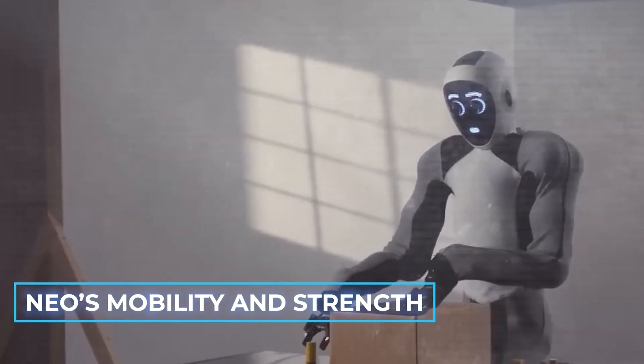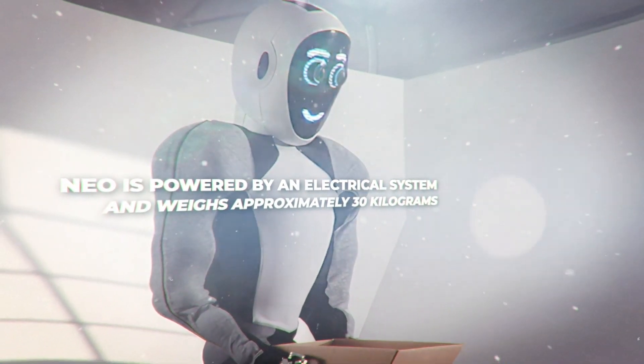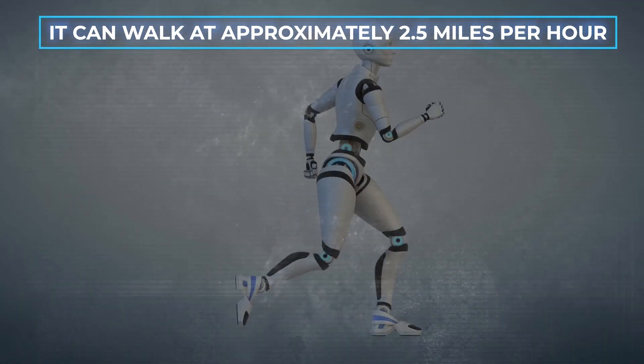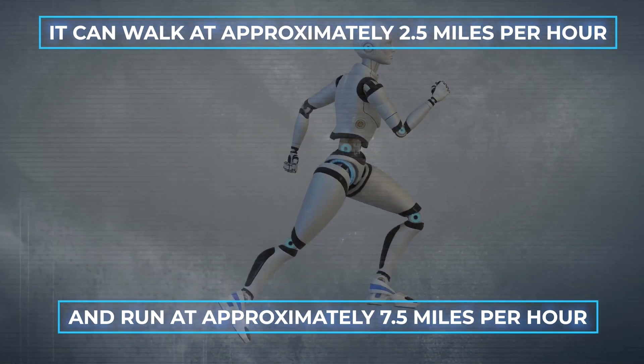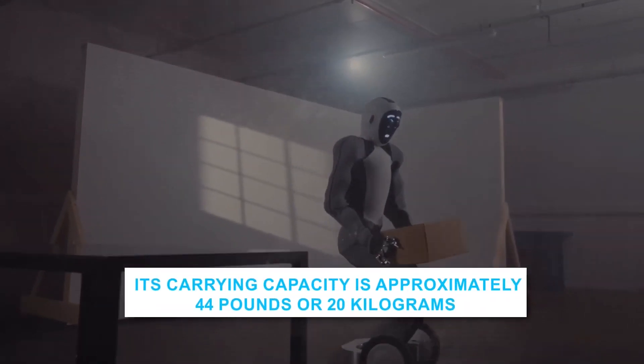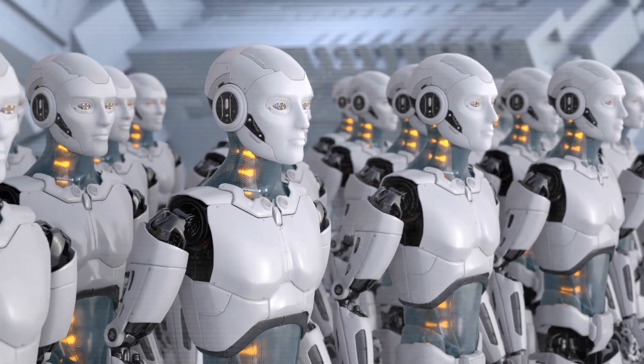NEO is empowered by an electrical system and weighs approximately 30 kilograms, or 66 pounds, making it lighter than many of its competitors. It can walk at approximately 2.5 miles per hour and run at approximately 7.5 miles per hour. Its carrying capacity is approximately 44 pounds, or 20 kilograms, which is astounding given its weight.